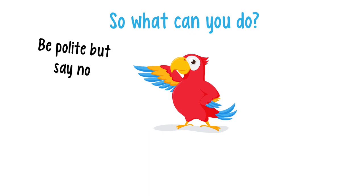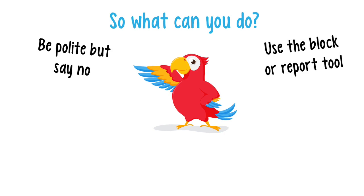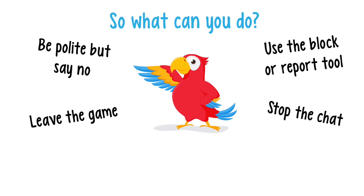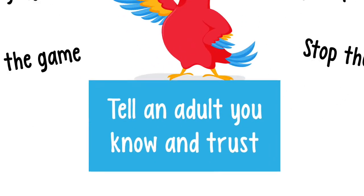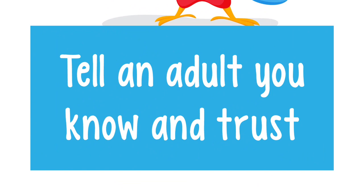If they're upset or being unkind and not taking no for an answer, you might want to use the report or block button. You could also exit the conversation, maybe by leaving the game or closing down the chat. But more important than anything else is that you tell an adult you know and trust about what's happened — that could be mum, dad, or whoever looks after you at home, or a teacher at school. Any adult you know and trust can help in this situation. Which adults are you going to tell and how can you let them know you have something important to say?